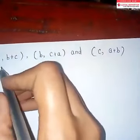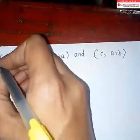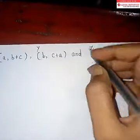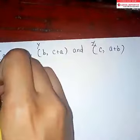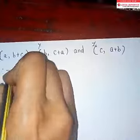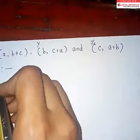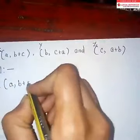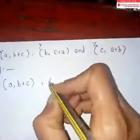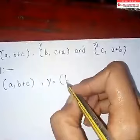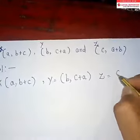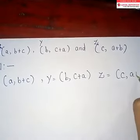Now, what is this? Capital X, Y, Z. We will get the solution. So x value a, b, c. y value b, c, a. z value c, a, a plus b.